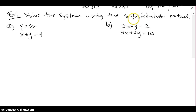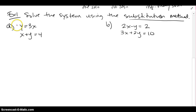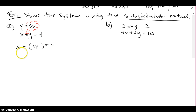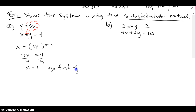We're going to solve the system using the substitution method. Our goal is to isolate x or y in one of the equations and plug it into the other one. Equation 1 already has y isolated, so I just have to take this result and plug it into the bottom equation. When I do that, I end up with x plus 3x equals 4, giving me 4x equals 4, so x equals 1.